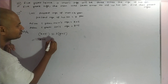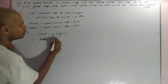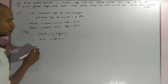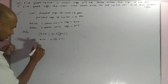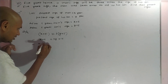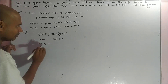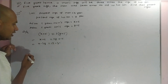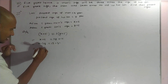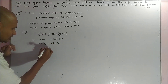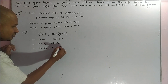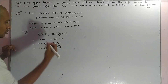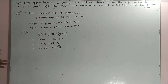This gives us x plus five equals three y plus fifteen. Simplifying: x minus three y equals fifteen minus five, so x minus three y equals ten. This is Equation number one.